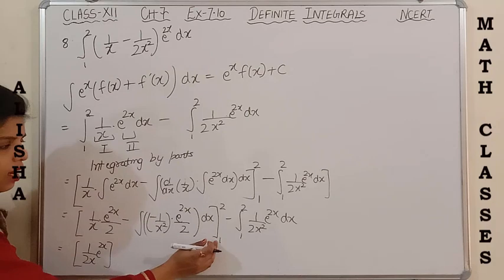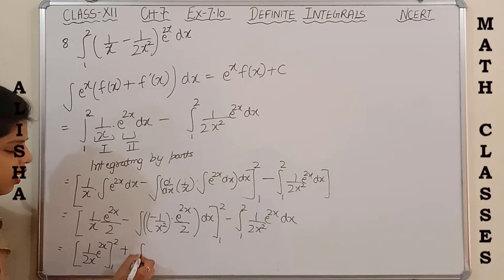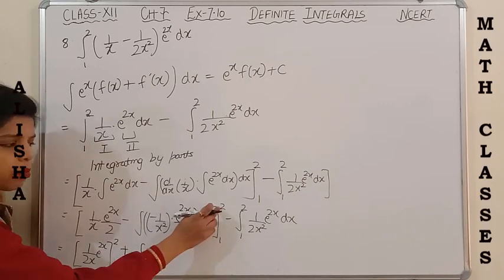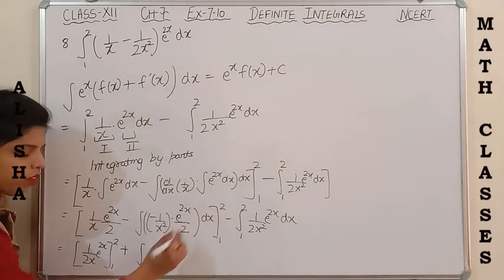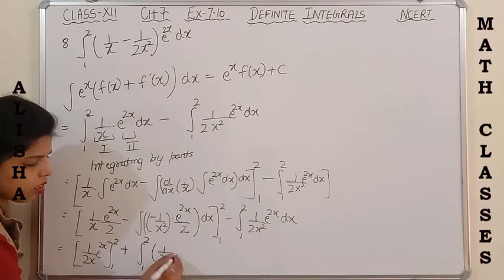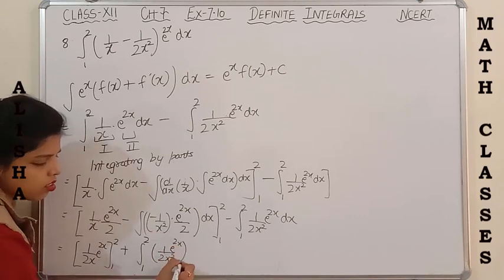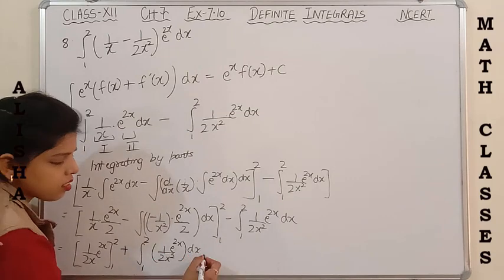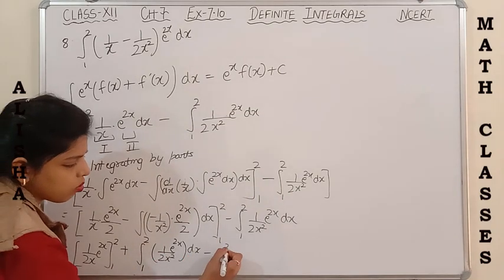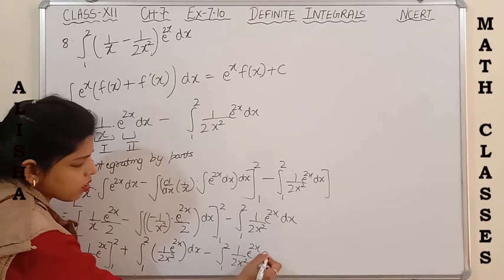Splitting this integral: the minus × minus becomes plus, giving plus integration from 1 to 2 of 1/(2x²) × e^(2x) dx. And the remaining term is minus integration from 1 to 2 of 1/(2x²) × e^(2x) dx. These two integrals are the same, so they cancel each other.